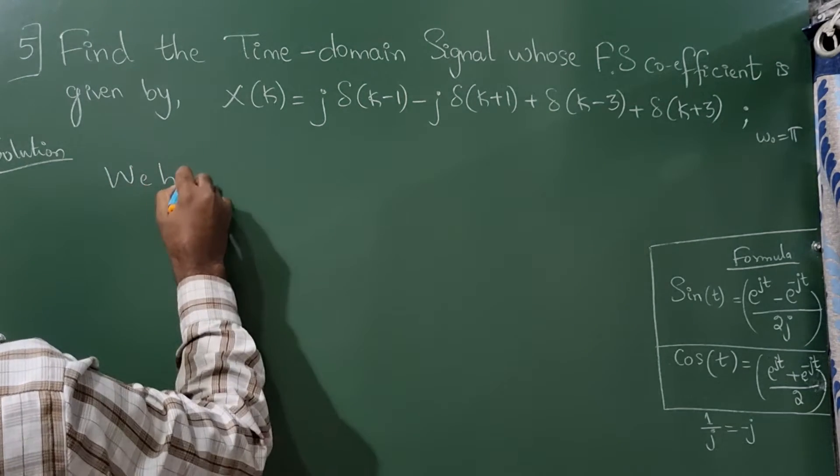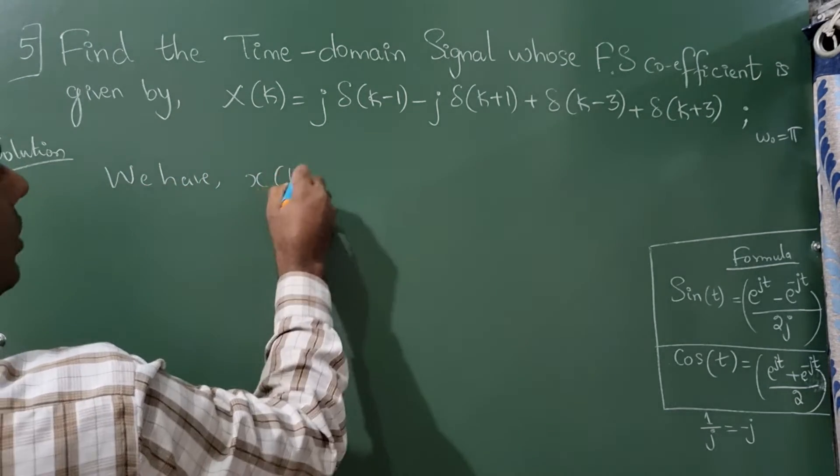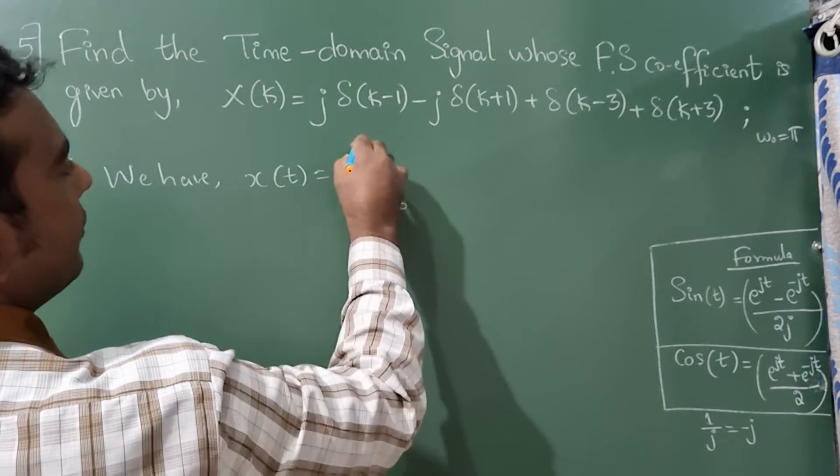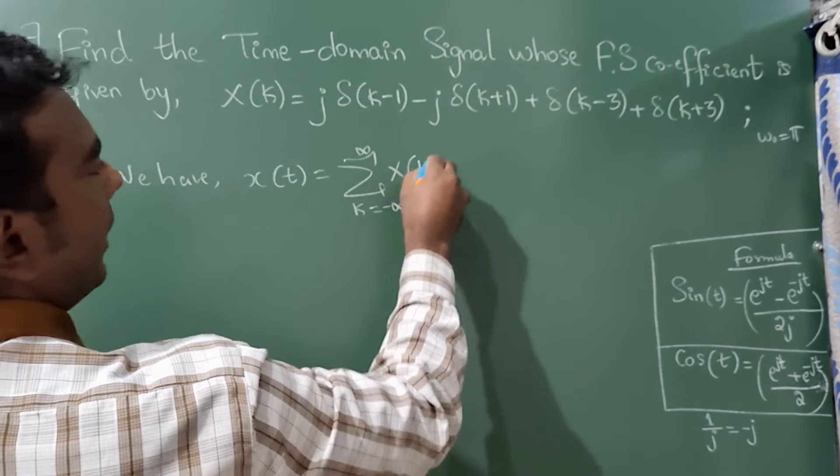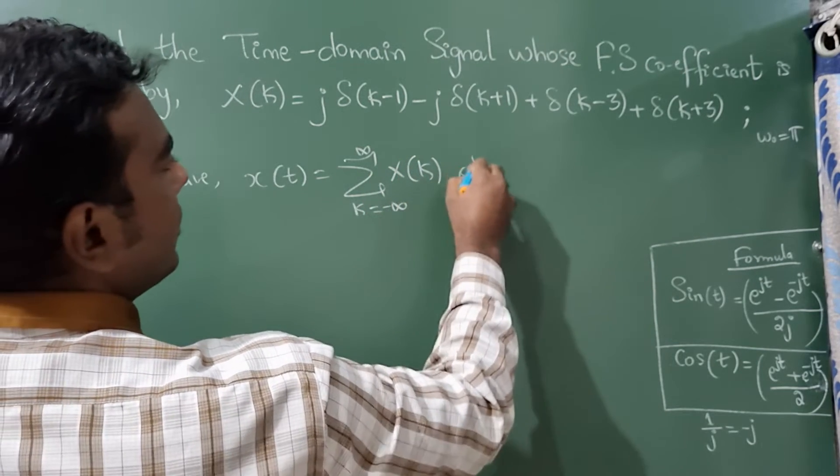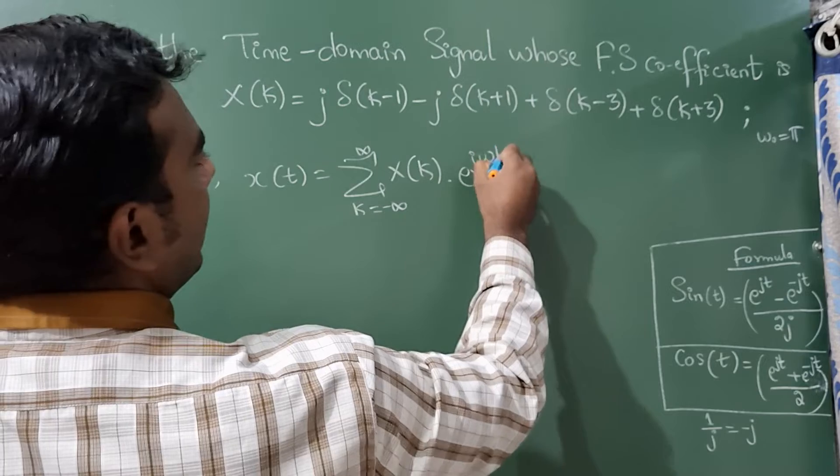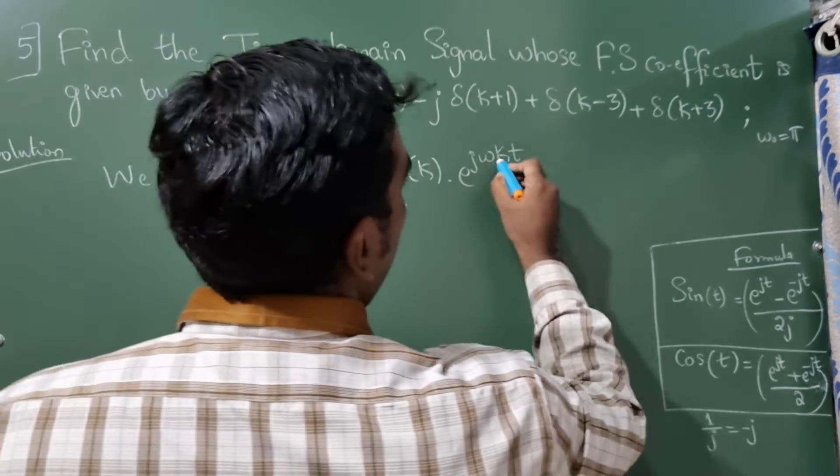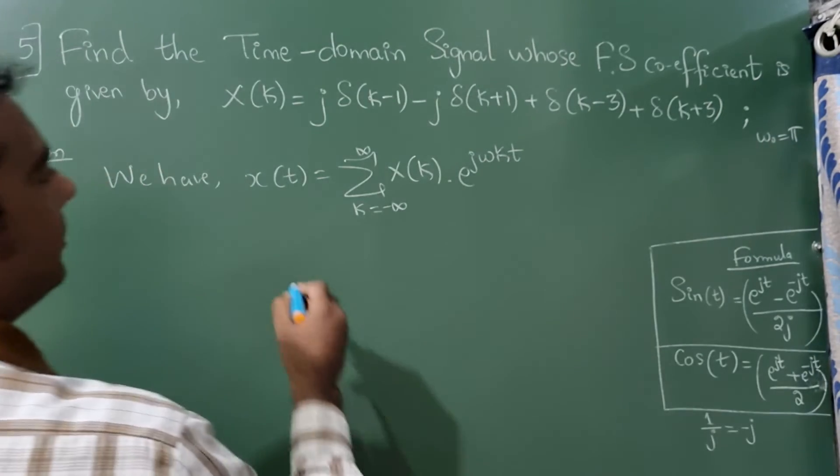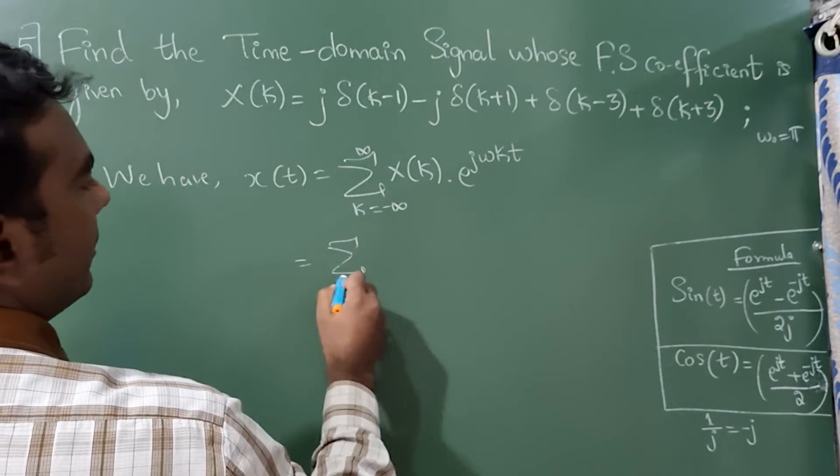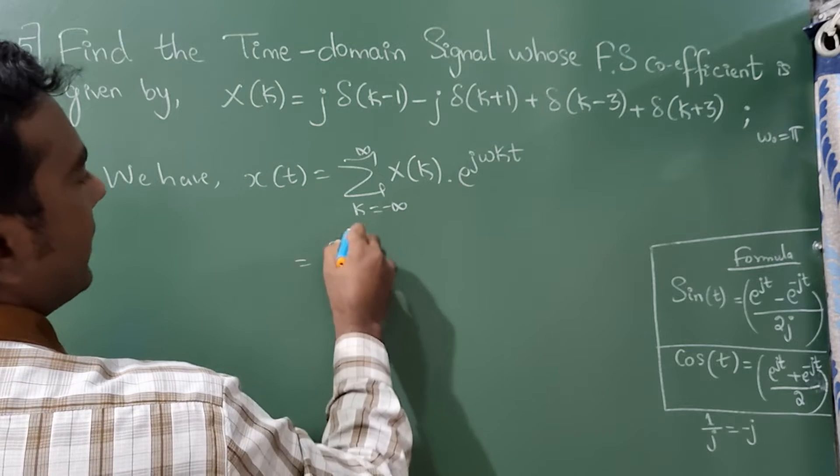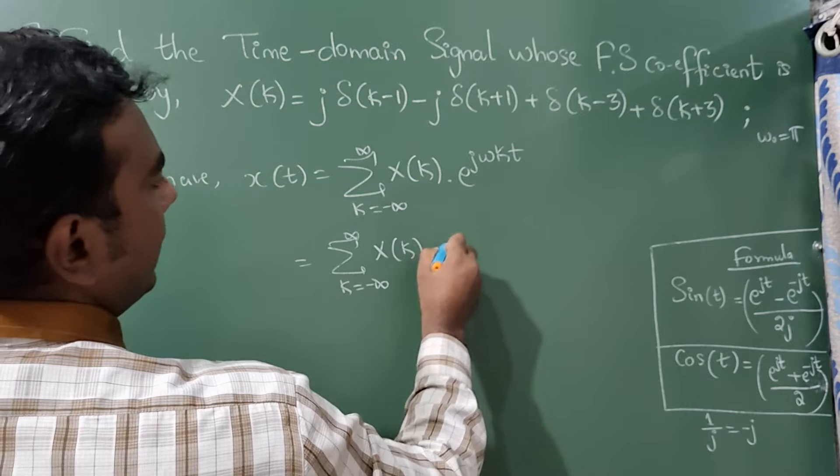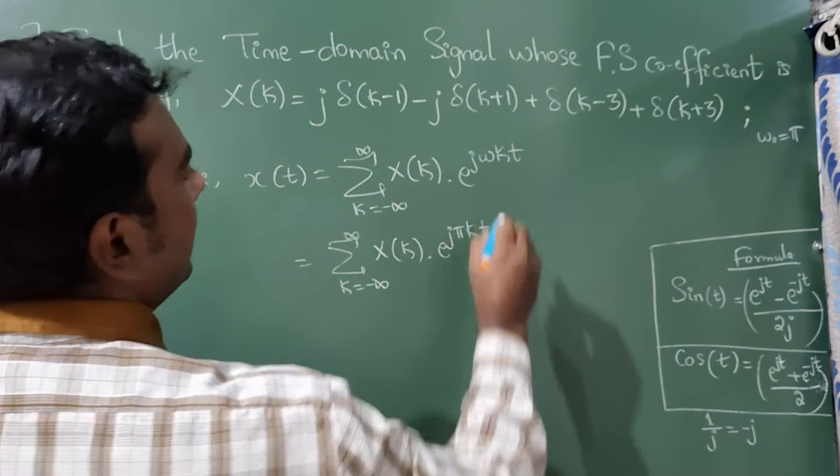We have a formula x of t is equal to summation of k is equal to minus infinity to infinity x of k e raised to j omega k t. Now omega value they have given is pi. So summation of k is equal to minus infinity to infinity x of k e raised to j pi k t.